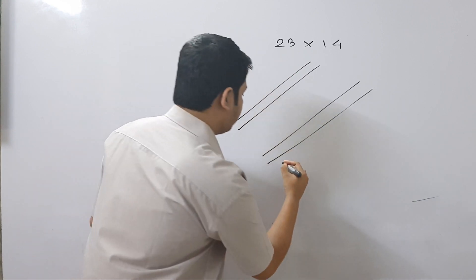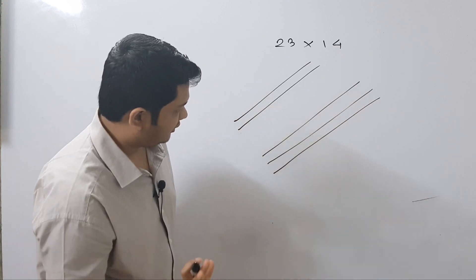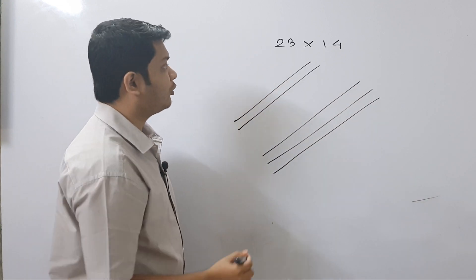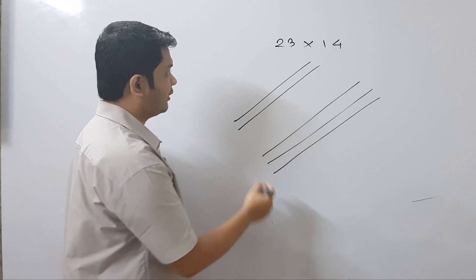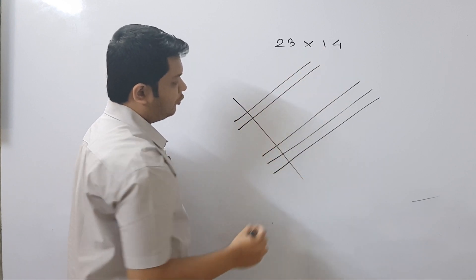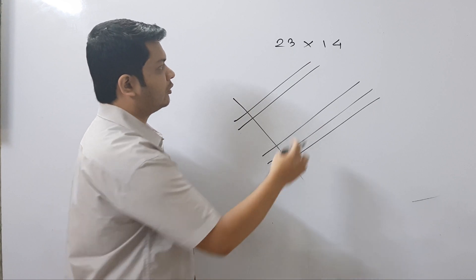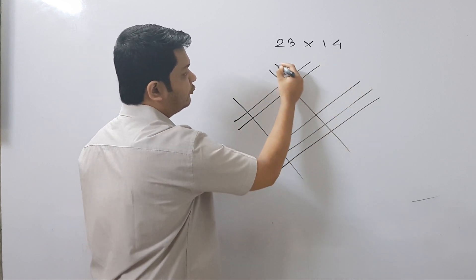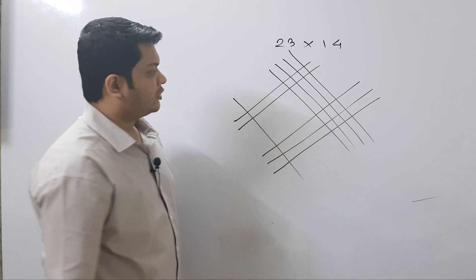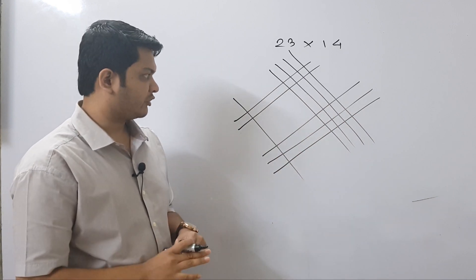Let me redraw it. I hope this is way better. So we are done with 23. Now coming to 14 — for 1 we give one straight line here, and for 4 we will draw four straight lines here. So you can see we are done with the first part.